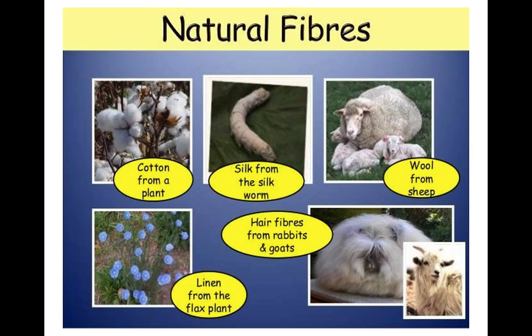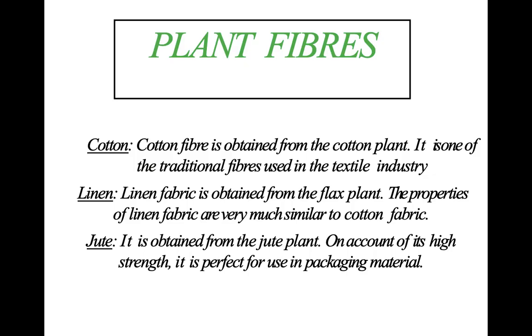Here is a picture showing examples: cotton from a cotton plant, silk from the silkworm, wool from the sheep, hair fibers from rabbits and goats, and linen from the flax plant. So we can obtain natural fibers from both plants and animals.